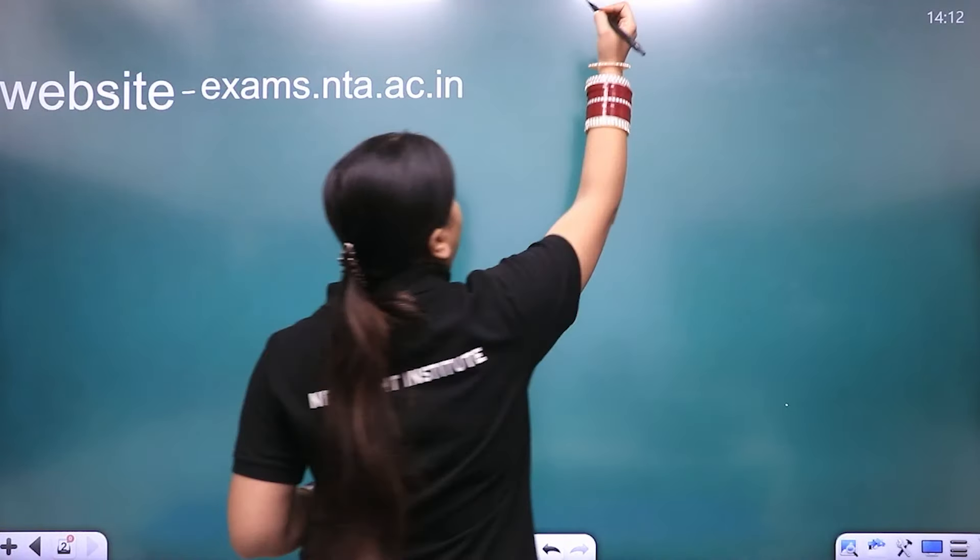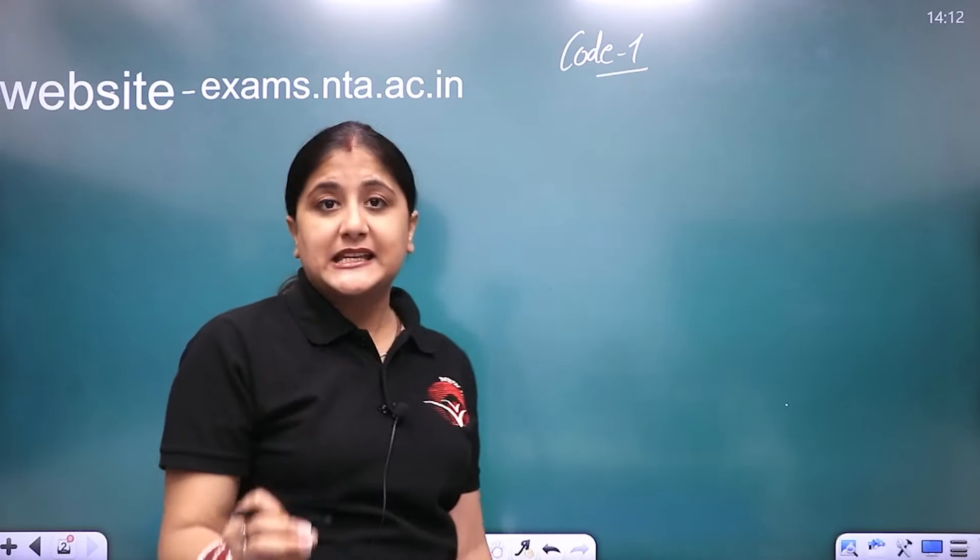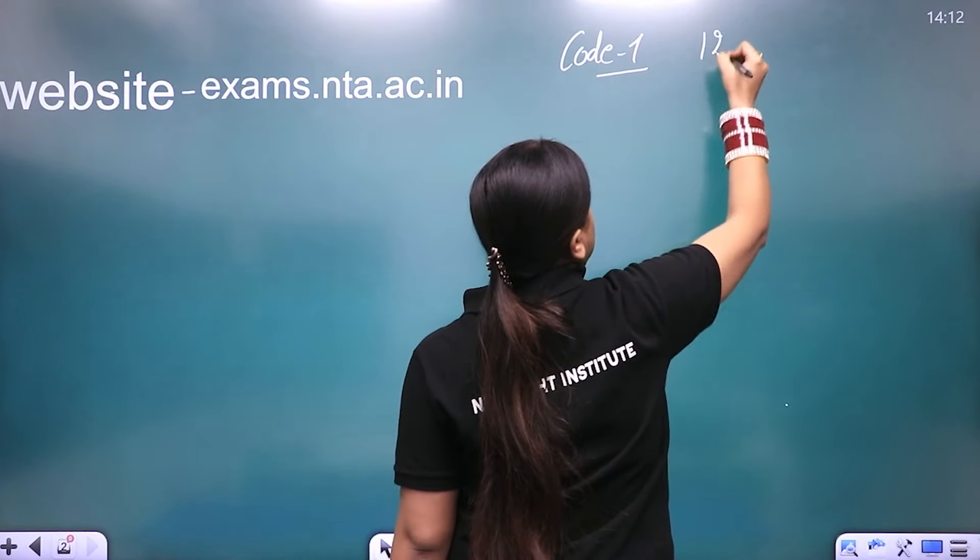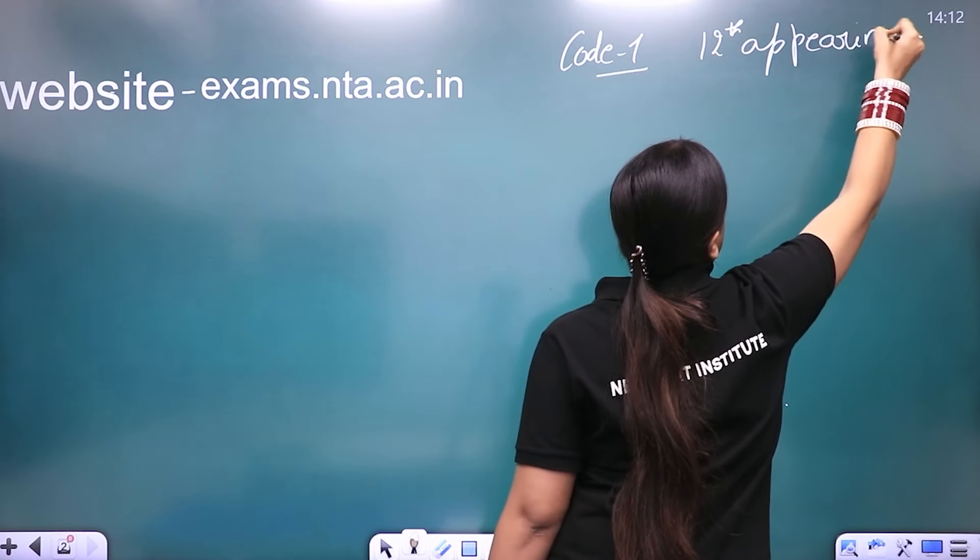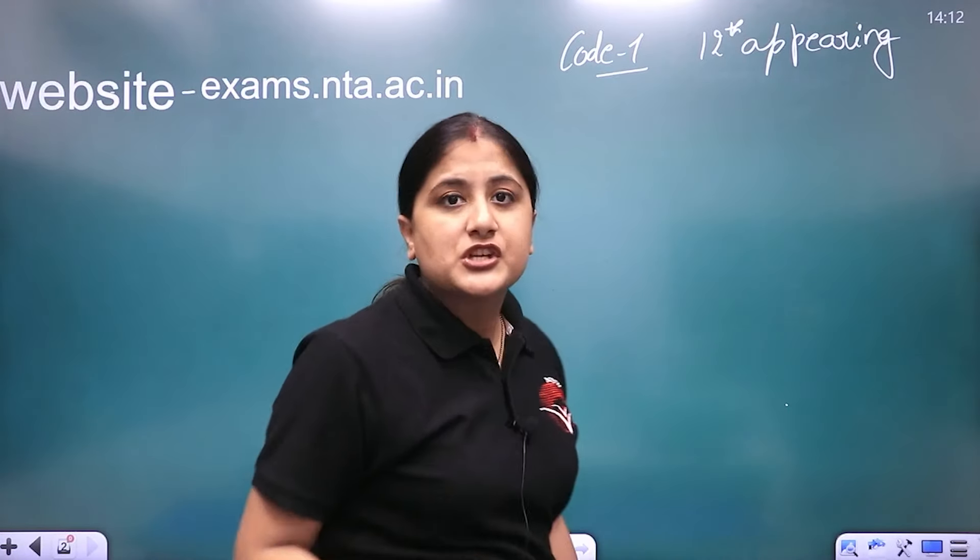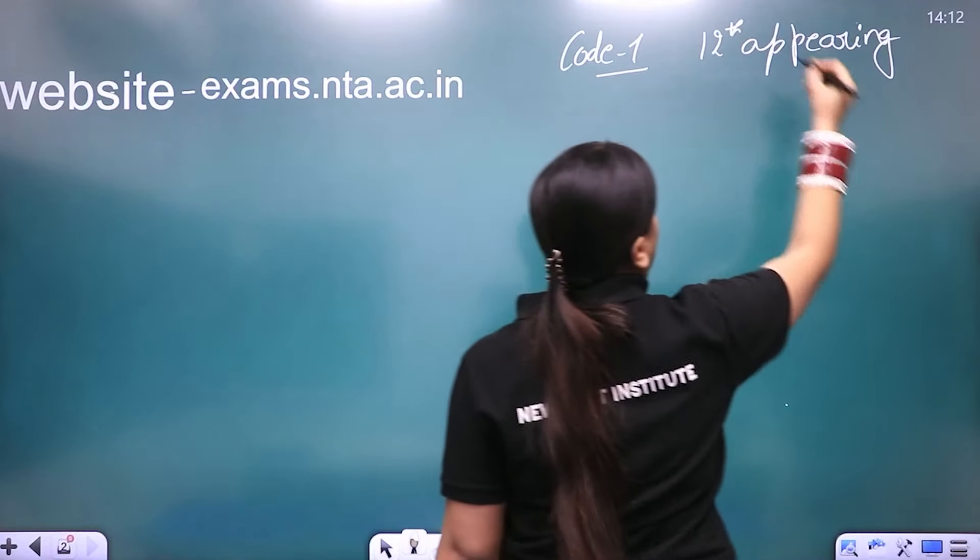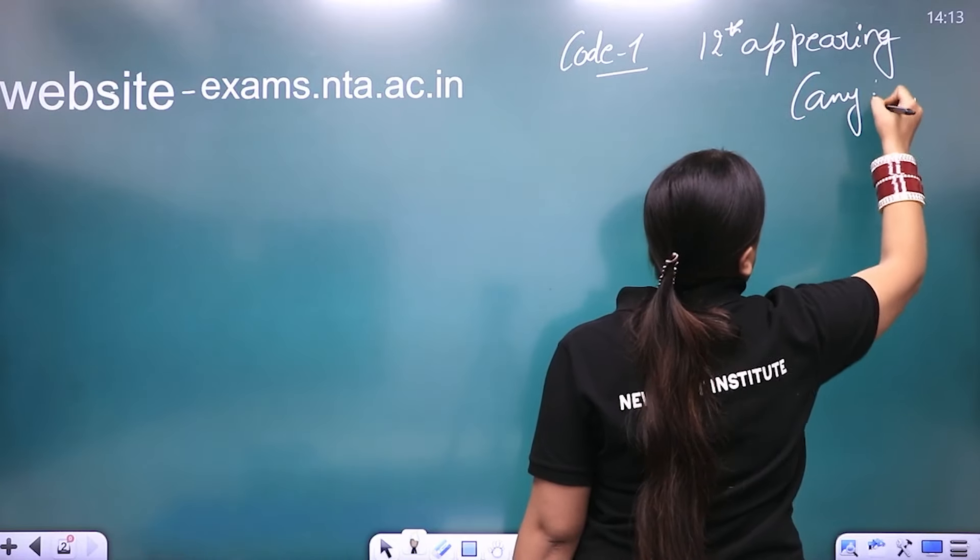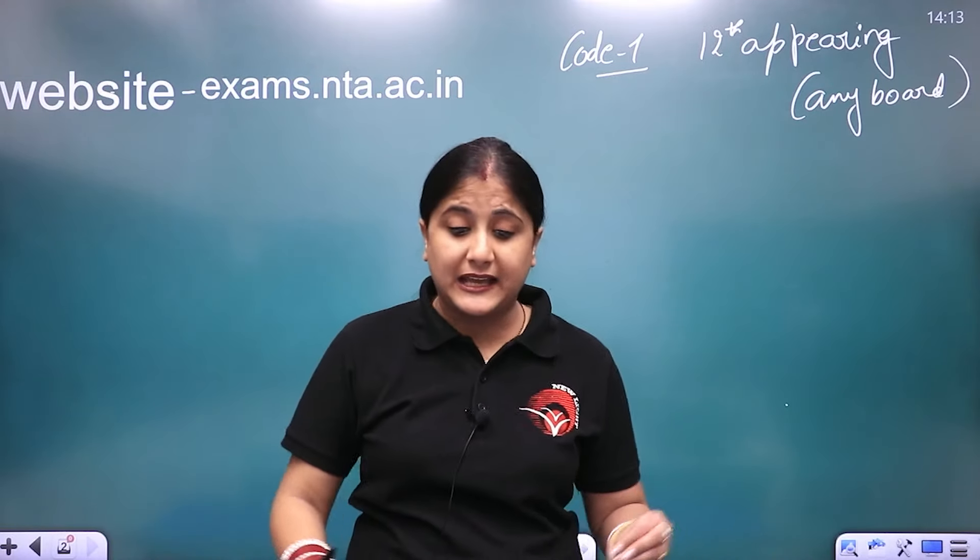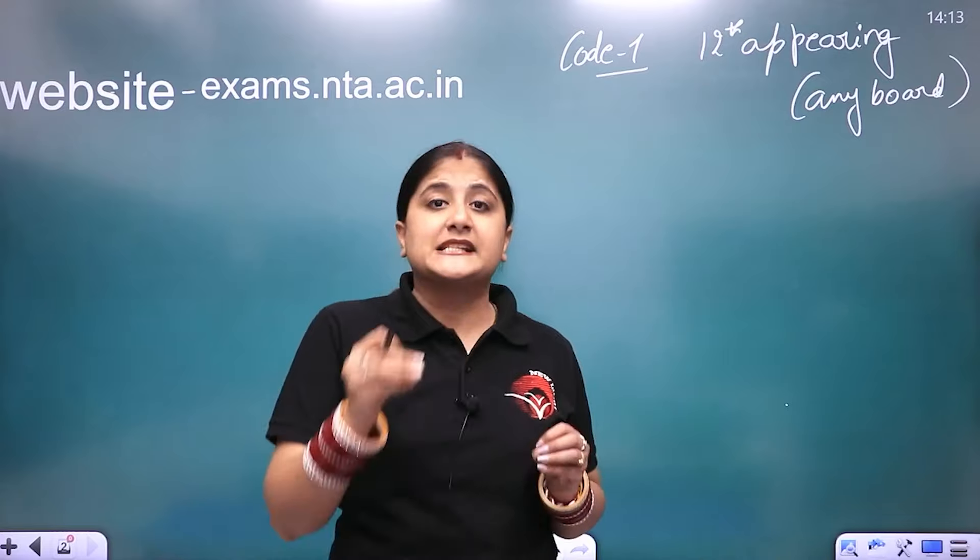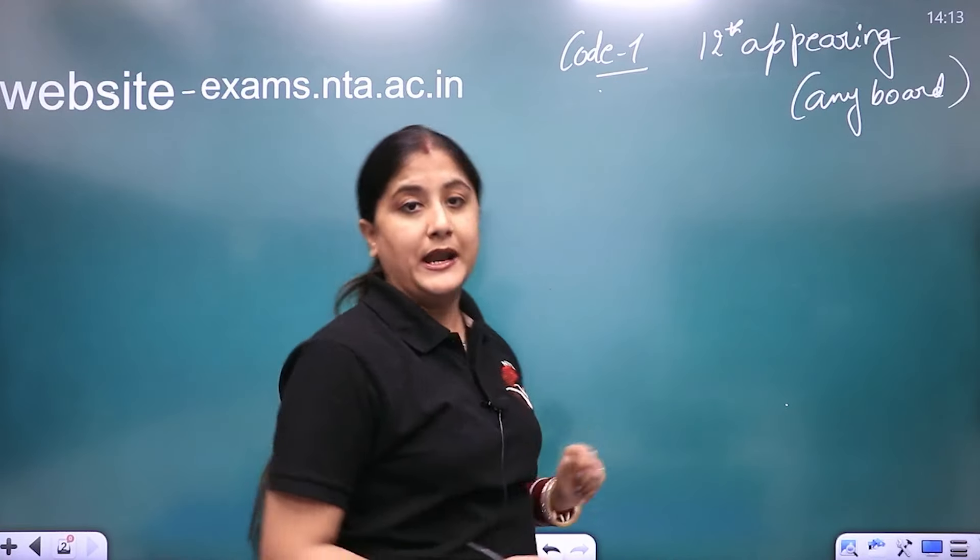Let me tell you, if we are talking about code 1, code 1 in very simple words will be used by 12th appearing students. As many students, 12th appearing, if you are giving 12th exams this year, which means if you are freshers, your results are not available, then you will use code 1. Any board. I am being very clear. Again I am repeating, if you are freshers, you are giving 12th, and you have not received results, so you will use code 1.